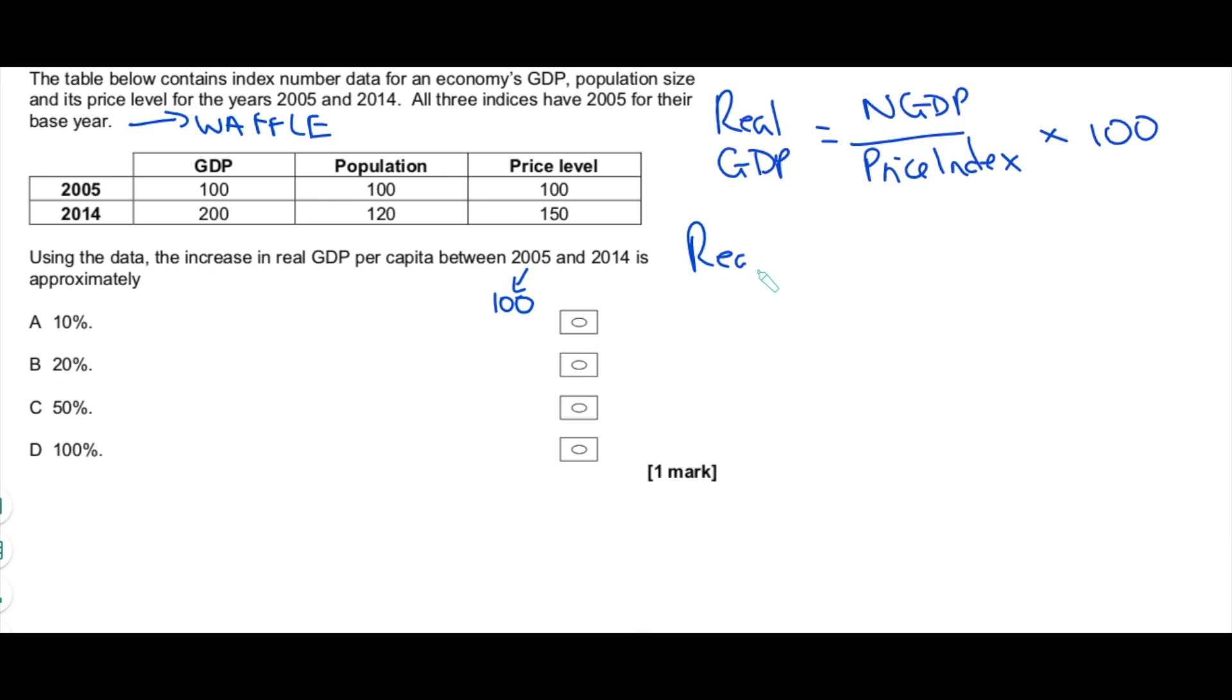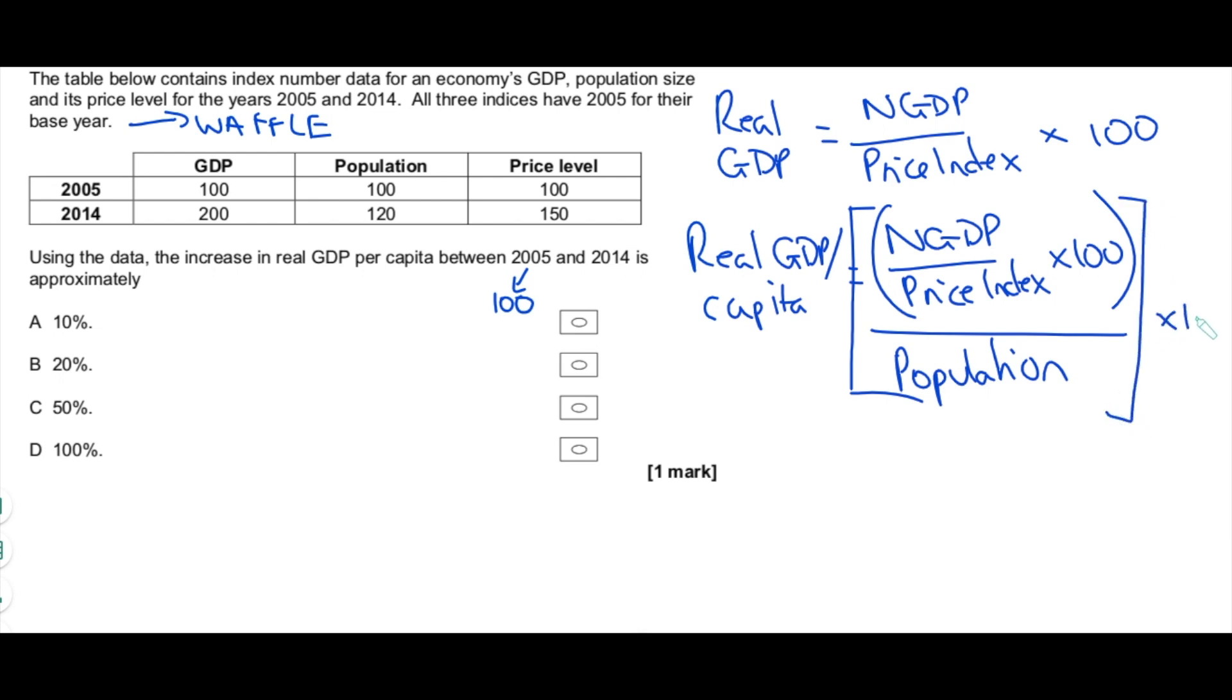Now what about real GDP per capita? So real GDP per capita is exactly the same equation - nominal GDP divided by a price index multiplied by 100, but now we need to divide that number, because that's real GDP, by a population. But again, this needs to be an index form and we have that population index, and then multiply all of that by 100 and that will give you real GDP per capita as an index number.